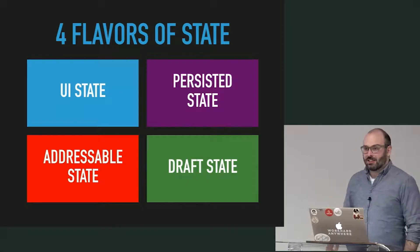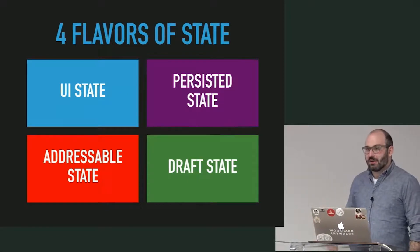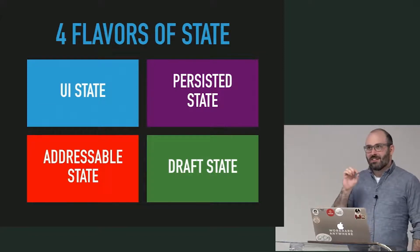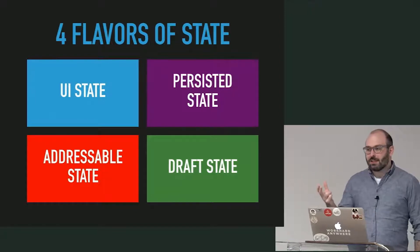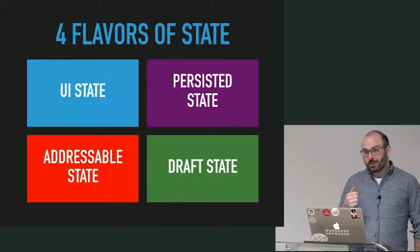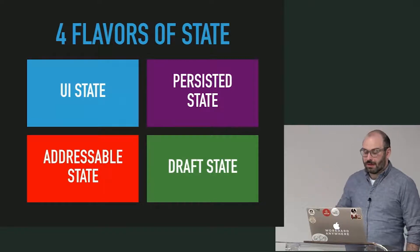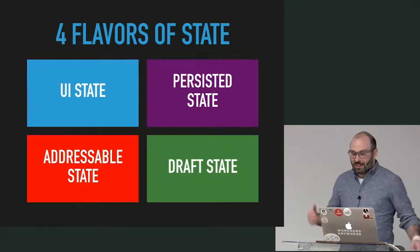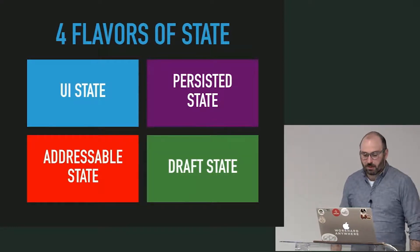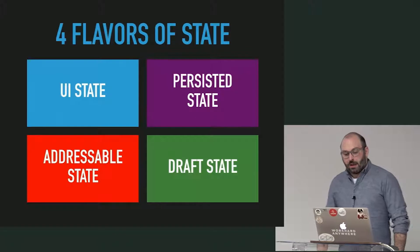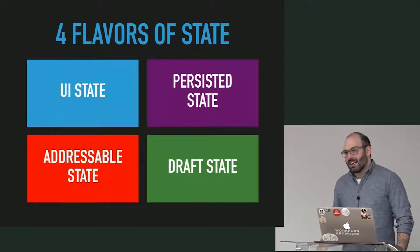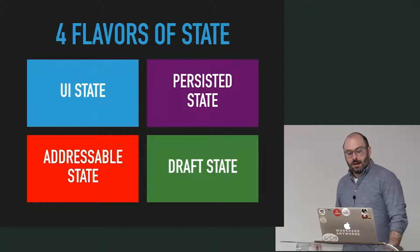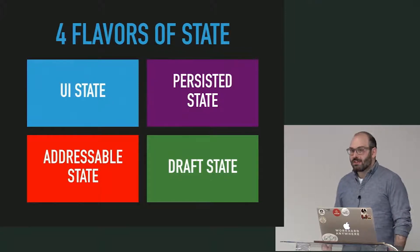We have persisted state — that's your Ember Data stuff, anything that goes into a database. The signal here is if that state has to live longer than the UI session, it needs to be persisted somewhere. Local storage and cookies count as persisted state because they live longer than the time a user's tab is open. We also have addressable state, which is dynamic segments in URLs and query params — anything that is URL-driven.